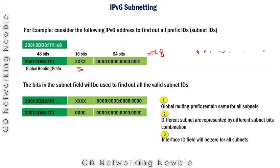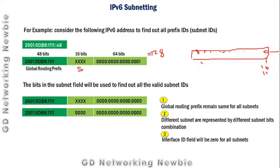Following these rules, the first subnet ID has the global routing prefix unchanged, the interface ID field all zeros, and the subnet field set to all 16 binary zeros. When converted back to hexadecimal this gives us 0000 in the subnet field. This is our first subnet ID or prefix ID.